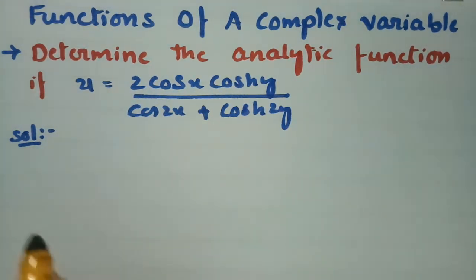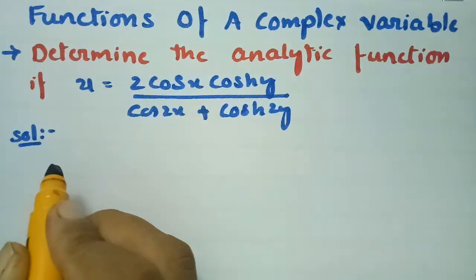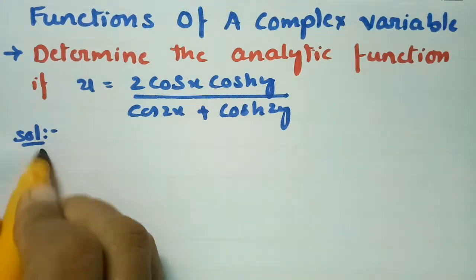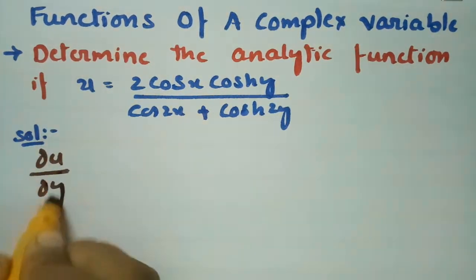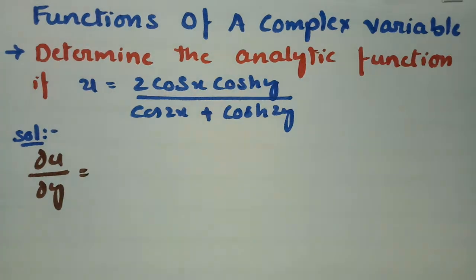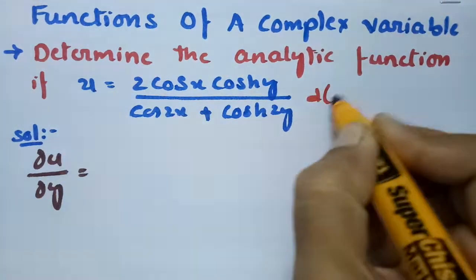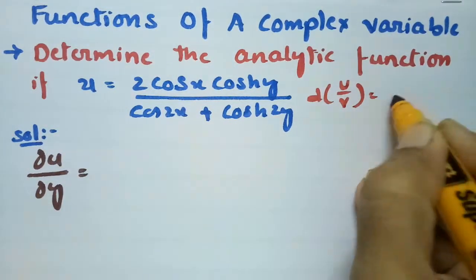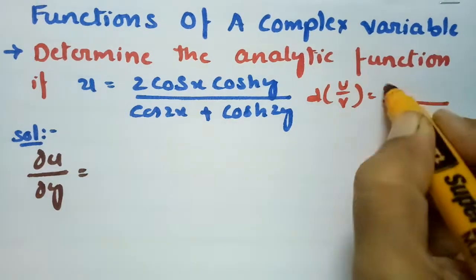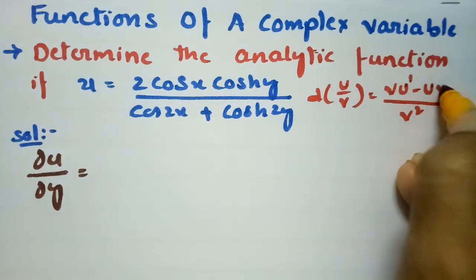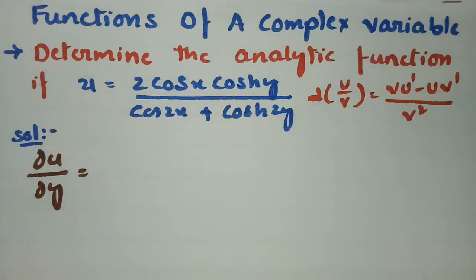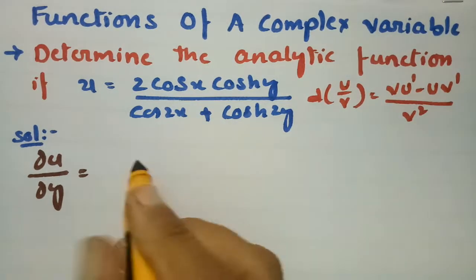Now I am going to make a derivative with respect to y, that is ∂u/∂y. Here u is given, so I am using the quotient rule formula: derivative of u/v is equal to (v·u' − u·v') divided by v².